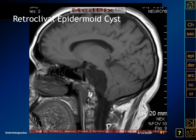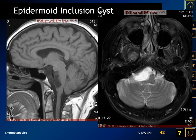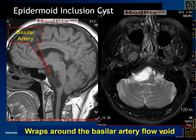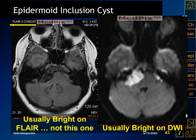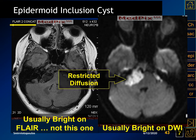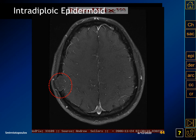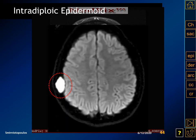This sagittal T1-weighted MR illustrates a retroclival epidermoid inclusion cyst extending from the posterior fossa into the vicinity of the suprasellar cistern. The lesion is seen surrounding the flow void for the basilar artery on both the sagittal image and on the axial T2-weighted image. Because of restricted diffusion due to the layers of desquamated keratin debris, the epidermoid inclusion cyst can be very bright on the diffusion-weighted image with corresponding low signal intensity on the ADC map.